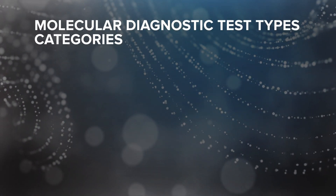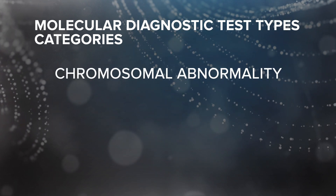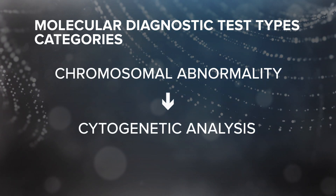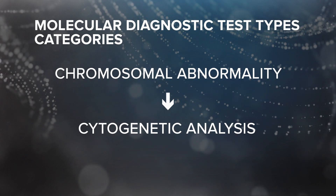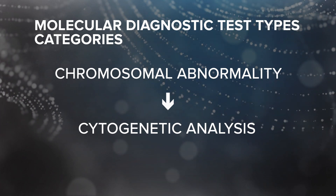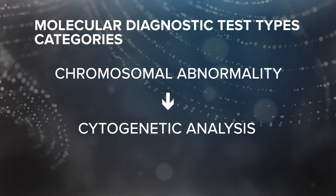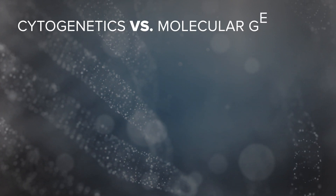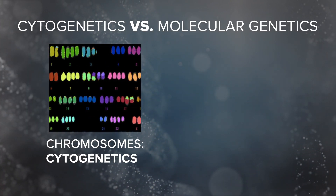Let's start by talking about the broad categories of molecular diagnostic test types. If you suspect that an individual might be affected by a chromosomal abnormality, you'll need to do a cytogenetic analysis. Chromosomal abnormalities include issues like an extra or missing chromosome, as in trisomy 21, or extra or missing parts of chromosomes. There are a few different options for cytogenetic analysis, which will be discussed in a different module called Cytogenetics.